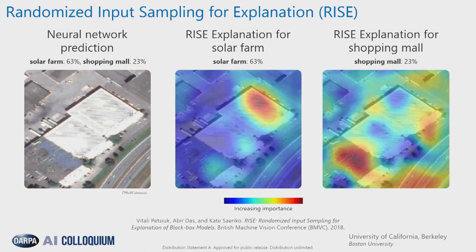The first contribution is a method called RISE — randomized input sampling for explanations — developed by the Boston University sub-team of UC Berkeley. RISE focuses on the question: why did you give me this prediction? Here we see a surprising prediction: given aerial imagery of what appears to be a shopping mall, the system predicts it's a solar farm. RISE generates heat maps identifying for each pixel its salience or importance with respect to each possible prediction, by probing the model with masked versions of the images.